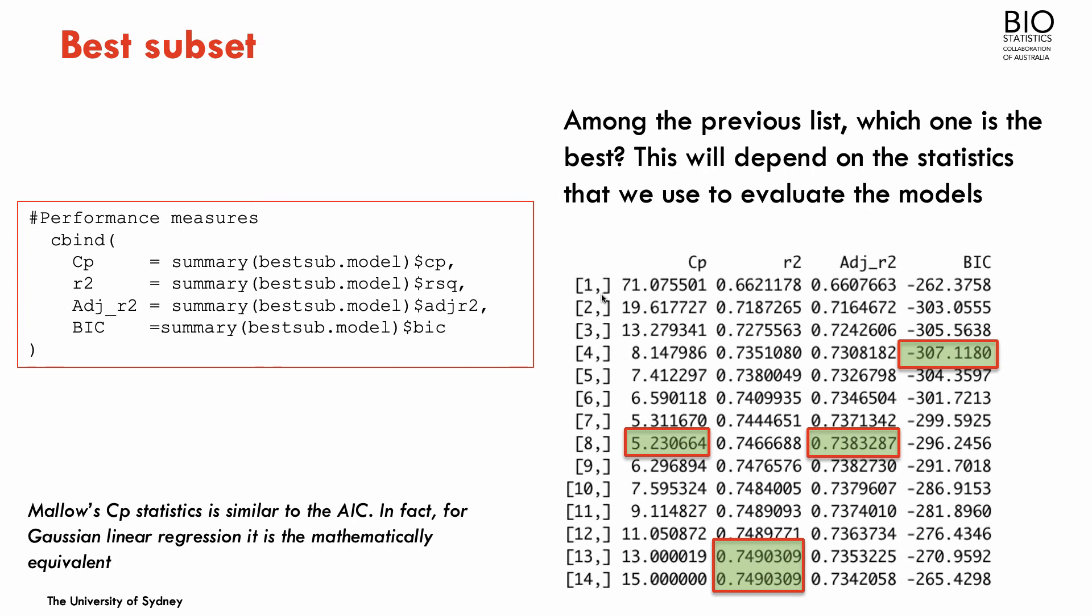And we could now look across these 14 models, the model with only one predictor, with two predictors, three predictors, and so on, and compute some performance measurements, such as the Mallow CP. The Mallow CP is pretty much identical to the AIC. The R squared, which is not a great statistic, because we know that the crude R squared, the non-cross-validated, can only increase, so it will always be going to increase with more predictors. The adjusted R squared and the BIC.